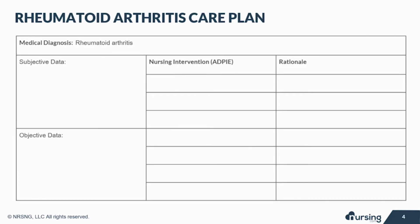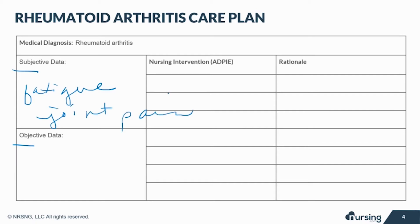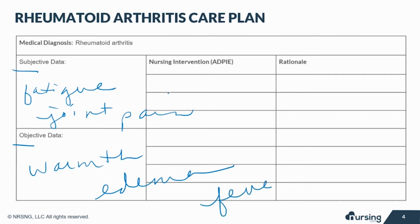Let's take a look at some of the subjective and objective data that your patient with rheumatoid arthritis may present with. Subjective data — these are things based on your patient's opinions or feelings. They might express fatigue, symmetrical joint stiffness, and joint pain. Objective data includes warmth of the joints, joint edema, dislocations, deformity of joints including ulnar deviation of the hands, fever, and weight loss.